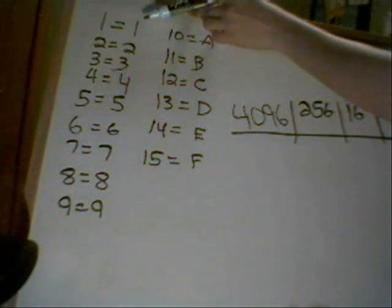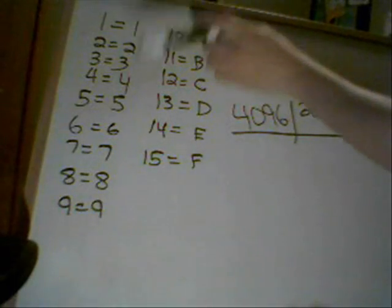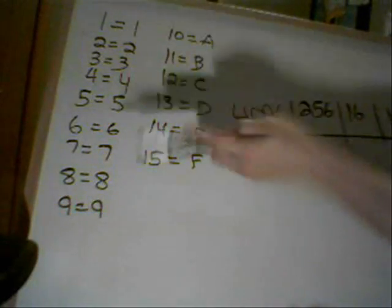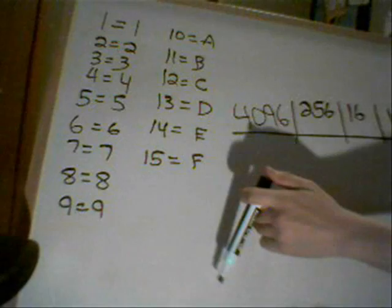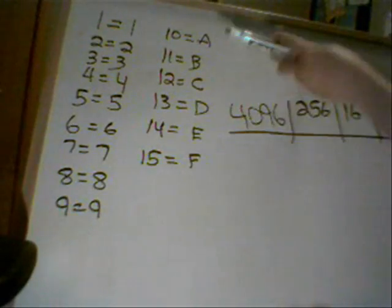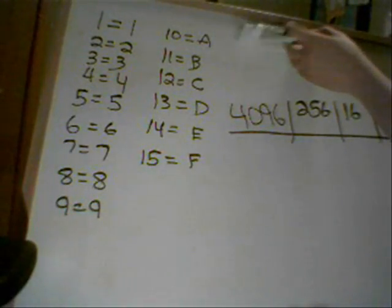Anyways, starting up here, 1 is equal to 1, 2 is equal to 2, 3 is 3, 4 is 4, 5 is 5, 6 is 6, and so on up to 9. Now, why 9? Because up here, I start back at 10, but 10 is equal to A.